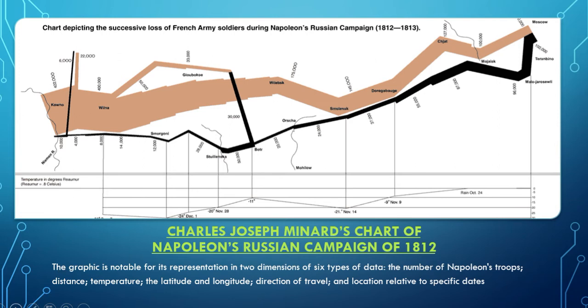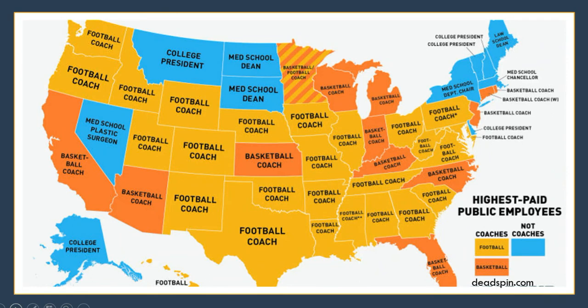That's a pretty amazing graphic organizer. Something more lighthearted — though a little depressing when I first saw it — is a color-coded map of the US showing who the highest-paid public employee is in each state. Most states show a football coach as the highest-paid public employee, shown in yellow. Orange represents basketball coaches, and blue represents others — mostly college presidents or deans of schools of medicine or law. We can start to see what we value in this country and who we pay the most.